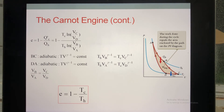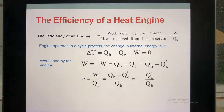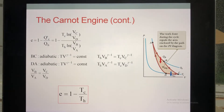So we have the formula for the efficiency. For a normal cycle you calculate using the Q-based formula to get the efficiency. But if you use the Carnot cycle, instead of Q (heat), you can write it in terms of temperature.